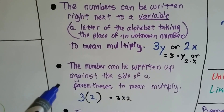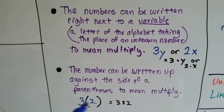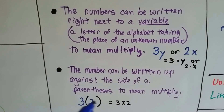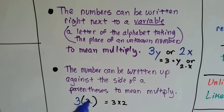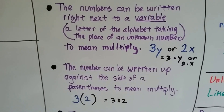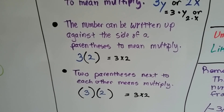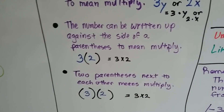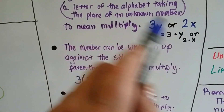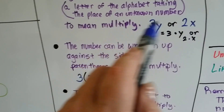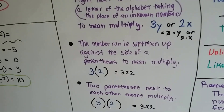Numbers can also be written next to a parenthesis — for example, 3(2) means three times two. That's used very widely in algebra. Also, when you have two parentheses next to each other, like (3)(2), that also means three times two. The whole point of the variable — that letter that takes the place of an unknown number — is why we can't use × anymore.